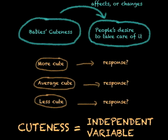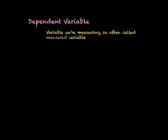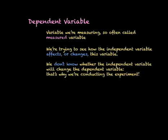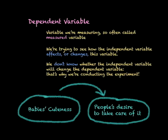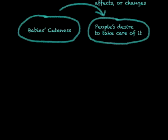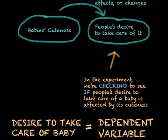We alter the levels of the baby's cuteness at the beginning of the experiment, and at the end of the experiment, we can check to see whether it's had an effect on people's desire to take care of the babies. The dependent variable is the variable we're measuring, so it's often called the measured variable. We're trying to see how the independent variable affects or changes this variable. We don't know whether the independent variable will change the dependent variable — that's why we're conducting the experiment. In this case, people's desire to take care of the baby is going to be our dependent variable.